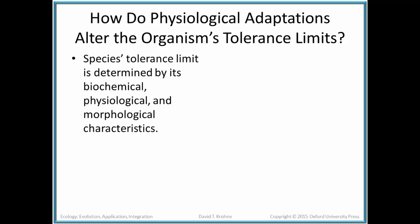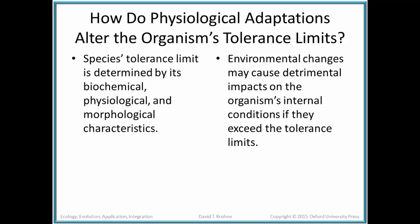How do physiological adaptations alter an organism's tolerance limits? First, we have to keep in mind that the species' tolerance limit is determined by its biochemical, physiological, and morphological characteristics — it can only change and adapt so much. If the environment moves way out of the tolerance limit for an organism, it's not going to be able to survive. Environmental changes may cause detrimental impacts on the organism's internal conditions if they exceed the limits, as we see with humans changing environments by cutting down forests or flooding areas, with changes occurring too quickly for organisms to survive.